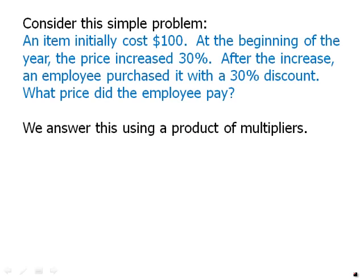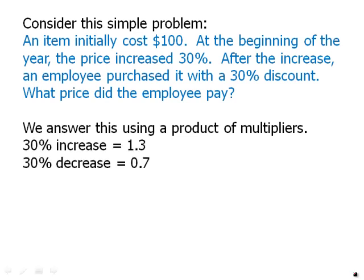We answer this using a product of multipliers. A 30% increase is a multiplier of 1.3; a 30% decrease is a multiplier of 0.7. So we multiply 100 by each: 100 × 1.3 × 0.7 = 91. That's the actual price the employee paid. It starts at 100, goes up to 130, but the employee's 30% discount applies to 130, not 100. Since 30% of 130 is larger than 30% of 100, the amount it goes down is larger than the amount it went up, so the employee pays less than $100.